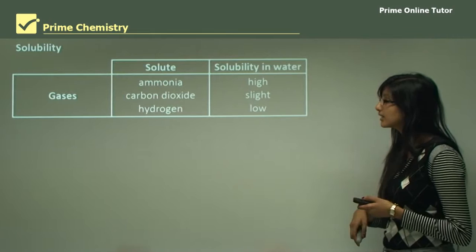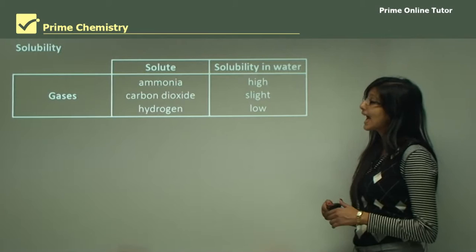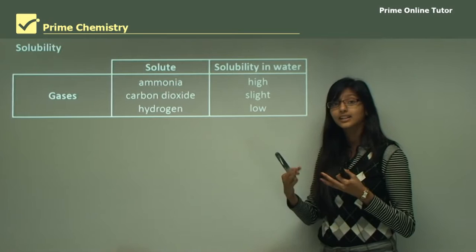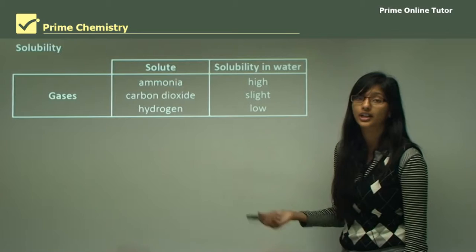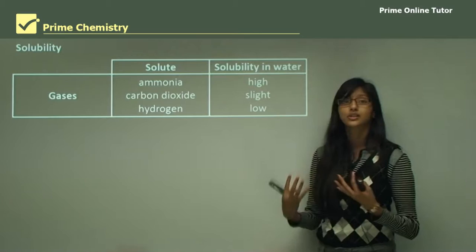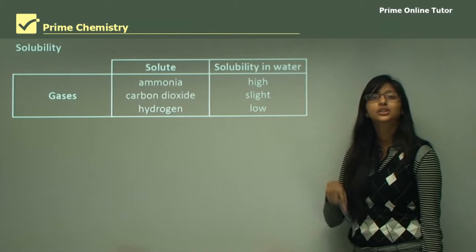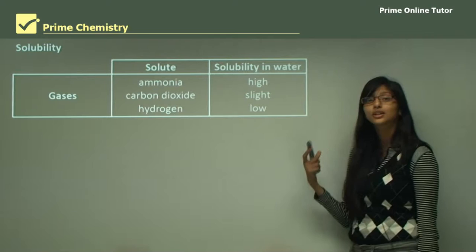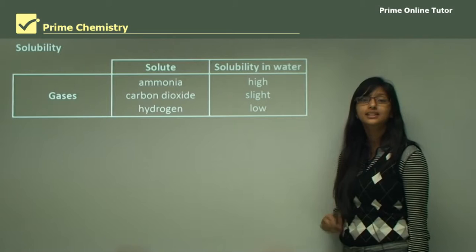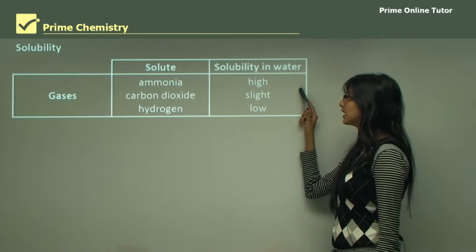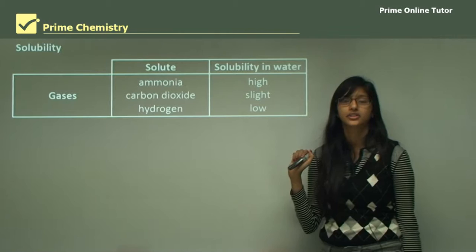Now let's look at the solubility of different substances, starting with gases. Ammonia is very highly soluble in water — you can dissolve ammonia in water to form an aqueous solution used to clean floors and ovens. Carbon dioxide gas is very slightly soluble — when you add carbon dioxide, only a small amount dissolves. And hydrogen has very low solubility, meaning hydrogen does not dissolve in water at all. So among gases: ammonia has the highest solubility in water, then carbon dioxide, then hydrogen.